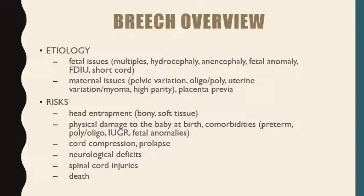Risks to the baby include head entrapment — maybe the hips and shoulders fit through but the head is too large or deflexes, so it's a relative rather than absolute poor fit. You could also have physical damage to the baby at birth, comorbidities, preterm, polyhydramnios or oligohydramnios — all those things play into risk. Any cord compression or prolapse, neurological deficits, even spinal cord injuries, and ultimately death is the worst case scenario.